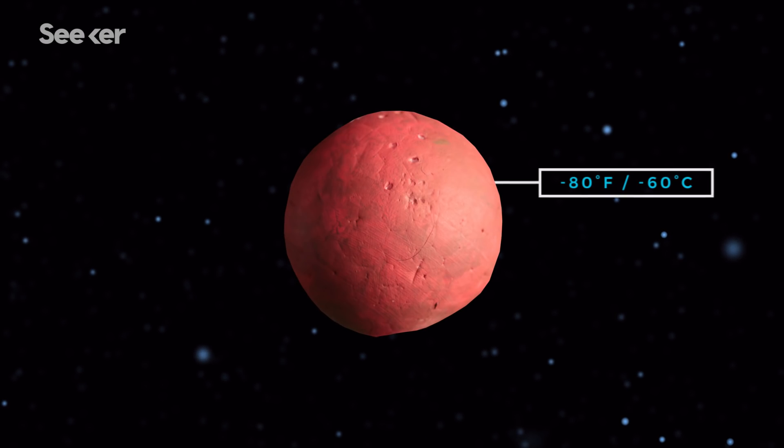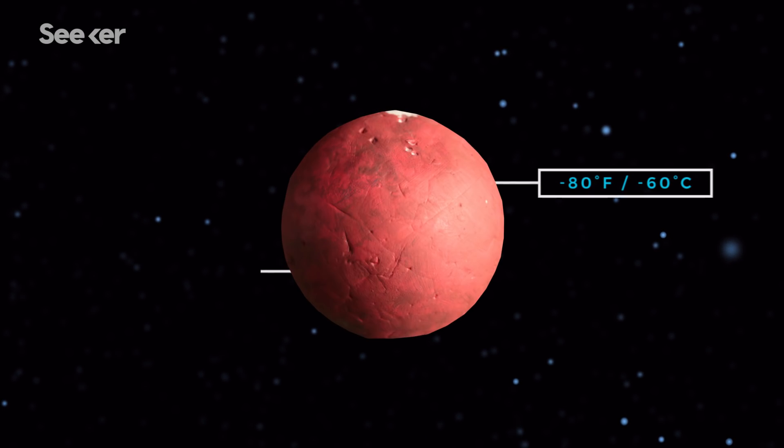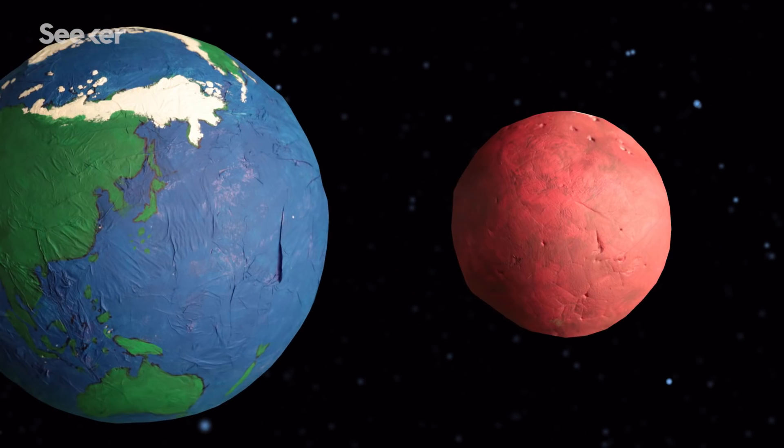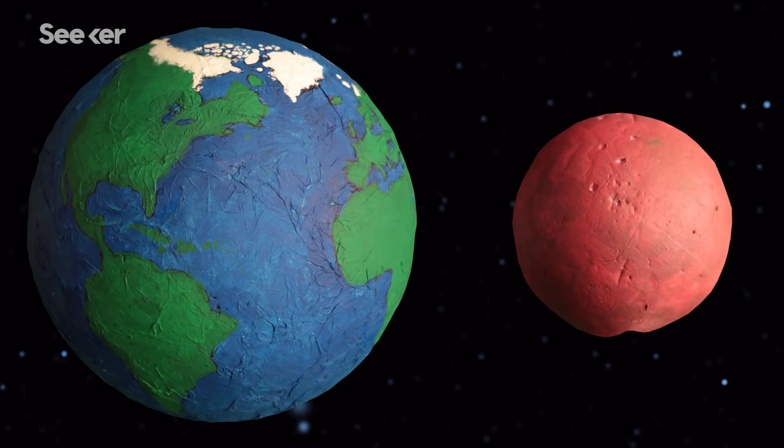Well, the red planet is super cold and has a very thin, unbreathable atmosphere comprised of 95% carbon dioxide. Yet its structure and presence of water are similar to Earth.